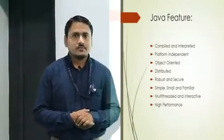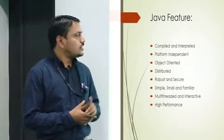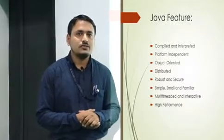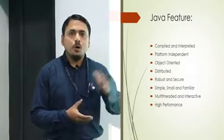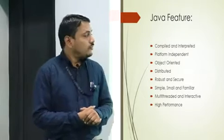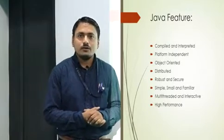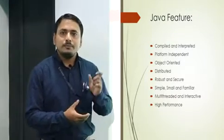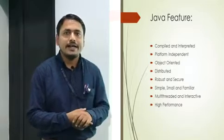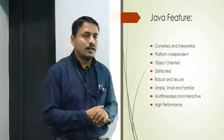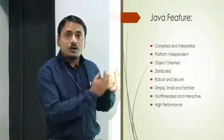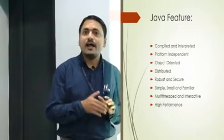Let us start with the features of Java. The first most important feature is known as compiled and interpreted. In C and C++ there is a compiler that compiles a whole program at a time, from source code to executable code. In Java, the compiler first compiles the Java code and creates an intermediate code known as bytecode, with the extension dot class file. That bytecode is not decoded by any user; it is specifically decoded by another part known as the interpreter. The interpreter interprets that bytecode to machine-understandable code, and then the system displays the output on the monitor screen.